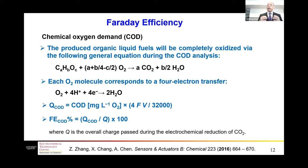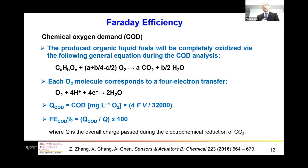The next question is how we can determine the efficiency — how much electricity or charge was used for the electrochemical reduction of carbon dioxide. With copper, we could have different products. We proposed a new approach: the chemical oxygen demand (COD) method for the detection of the faradaic efficiency of liquid products. This method has been widely used for water quality assurance and control.